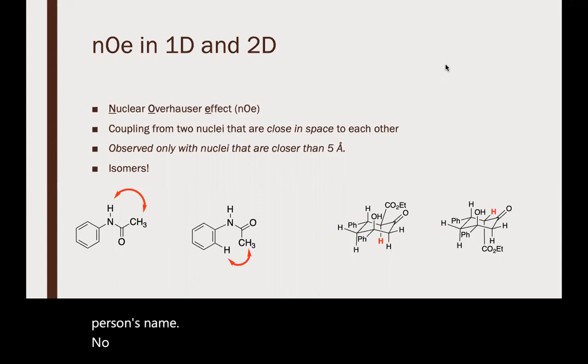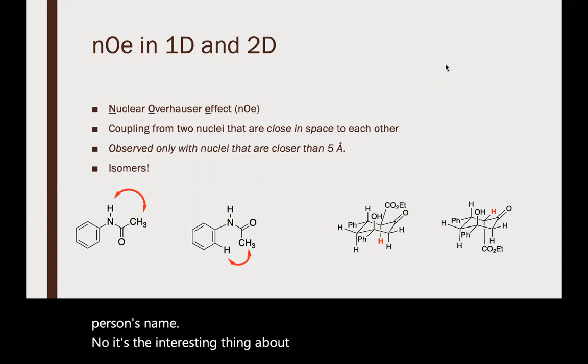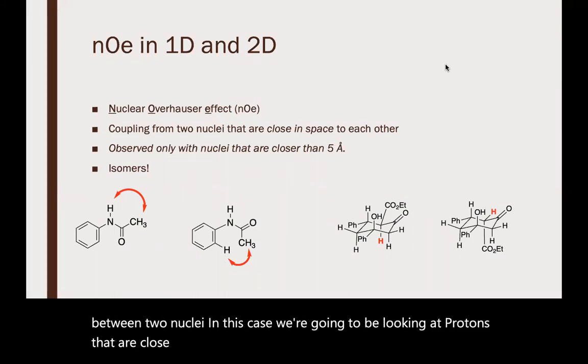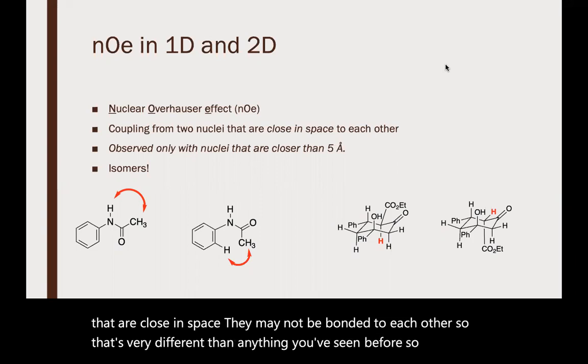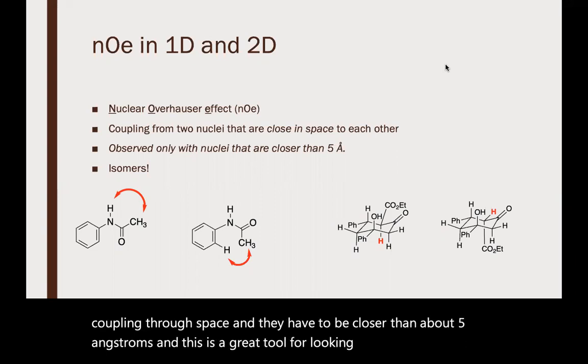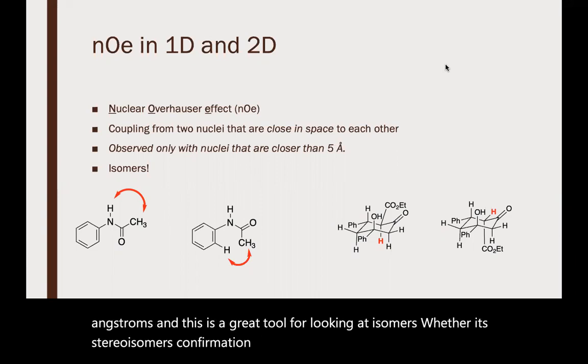The interesting thing about NOE is that it's the coupling between two nuclei, in this case protons, that are close in space. They may not be bonded to each other, so this is very different. This is coupling through space and they have to be closer than about 5 angstroms. This is a great tool for looking at isomers, whether stereoisomers, conformational isomers, or geometric isomers.